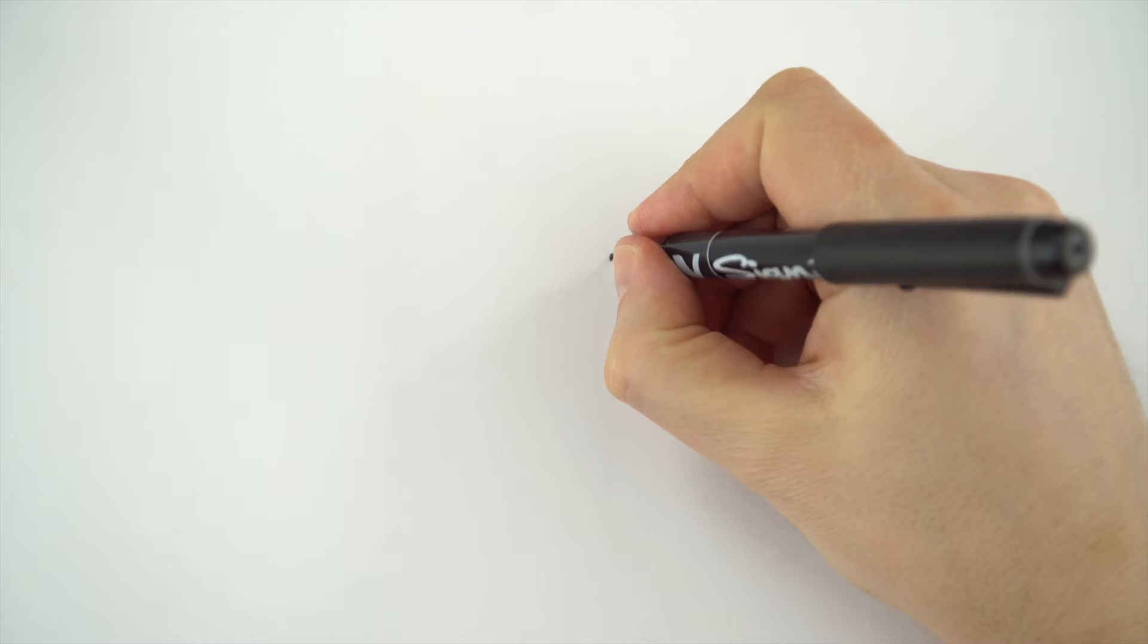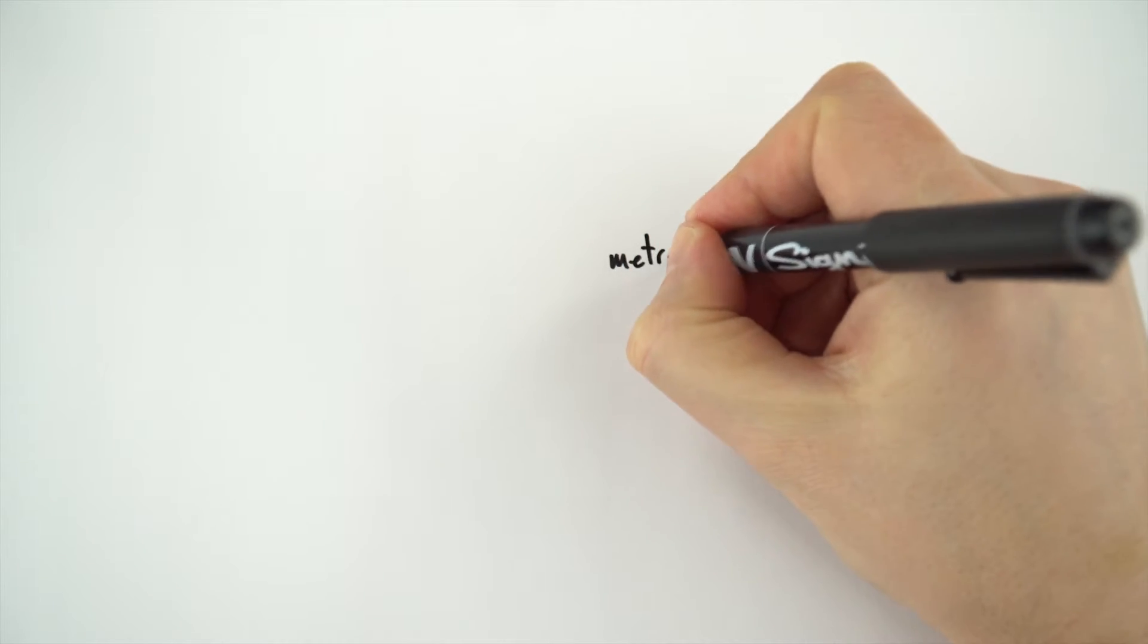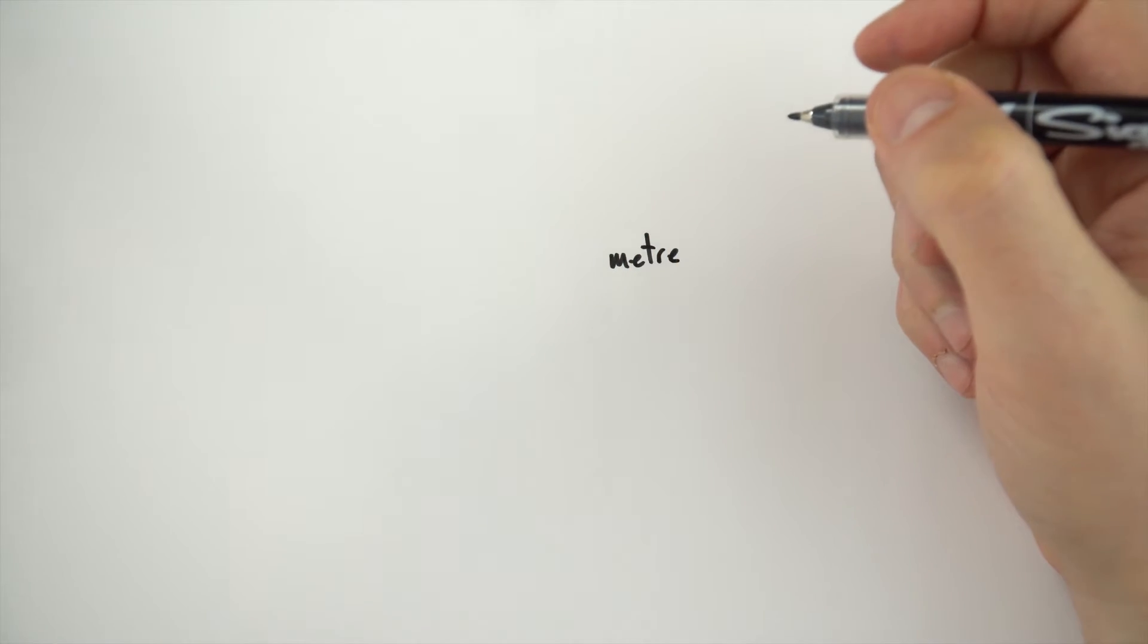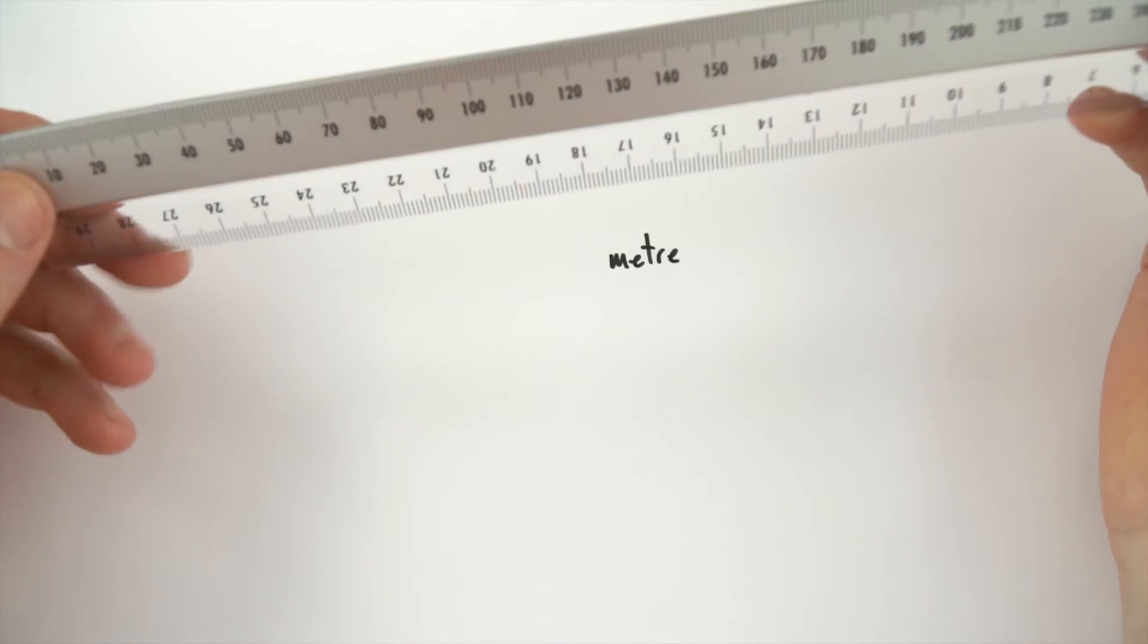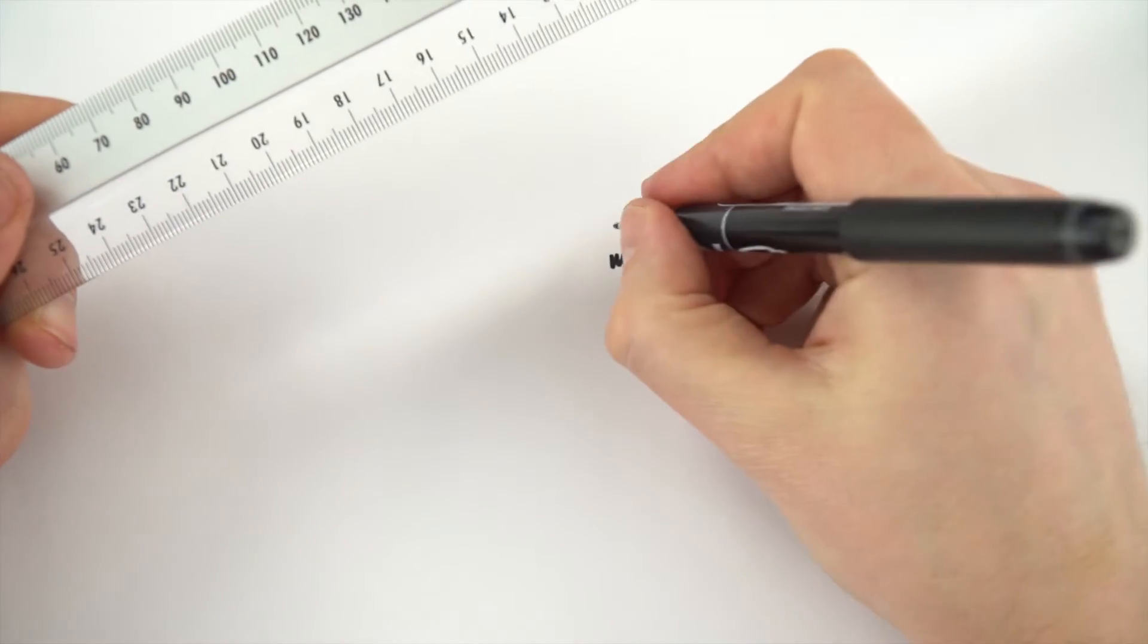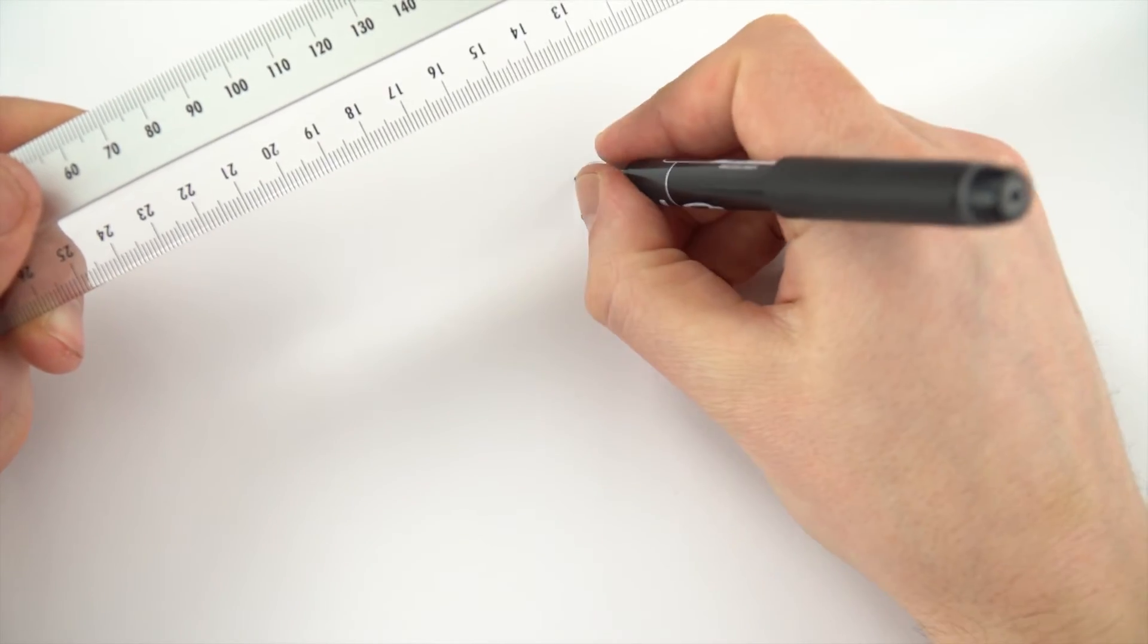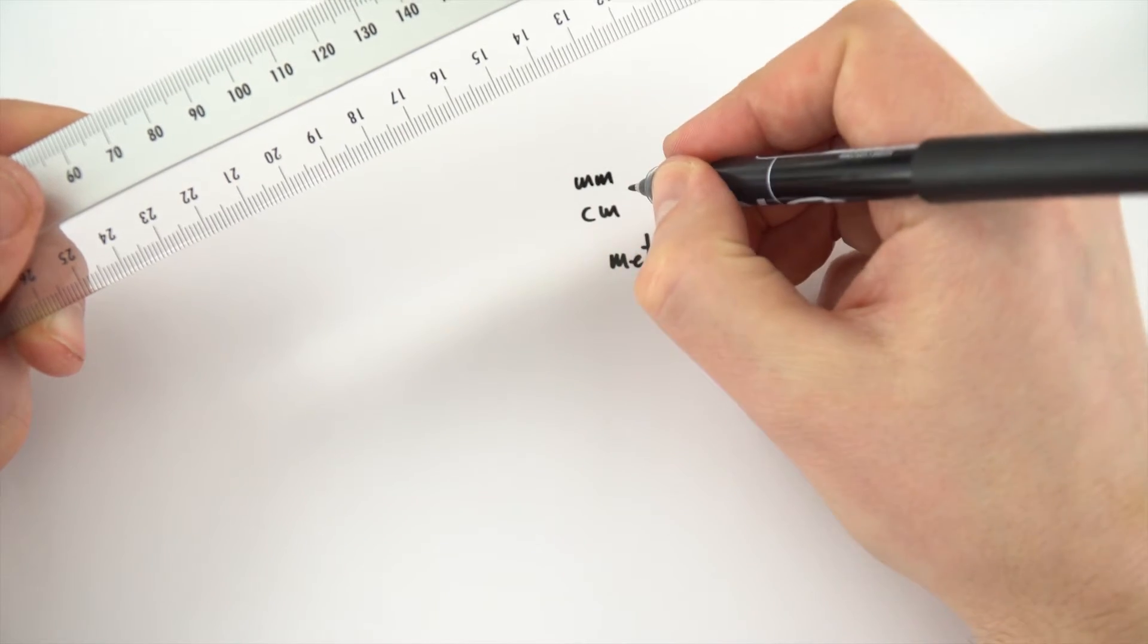Now in physics, if we want to measure a distance, we always use the metre. But sometimes we want to measure things which are really small. Maybe we're using centimetres, perhaps, or we're using millimetres. And we're pretty used to using these at the moment.